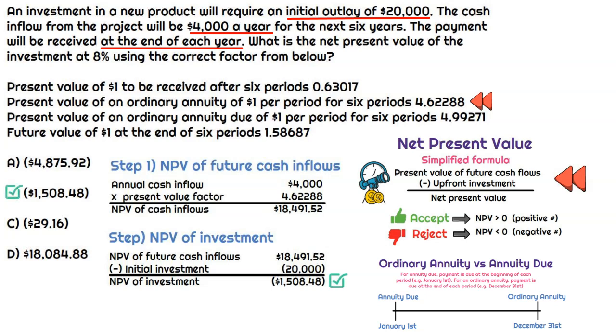If it asks us, should they accept or reject the project? Well, who wants to accept a project that's going to return negative amount of value, right? So we would reject this project, but it doesn't ask us that. It just asks us for the net present value. We already figured that out. It's $1,508.48, and that's a negative number. We'll see you next time.